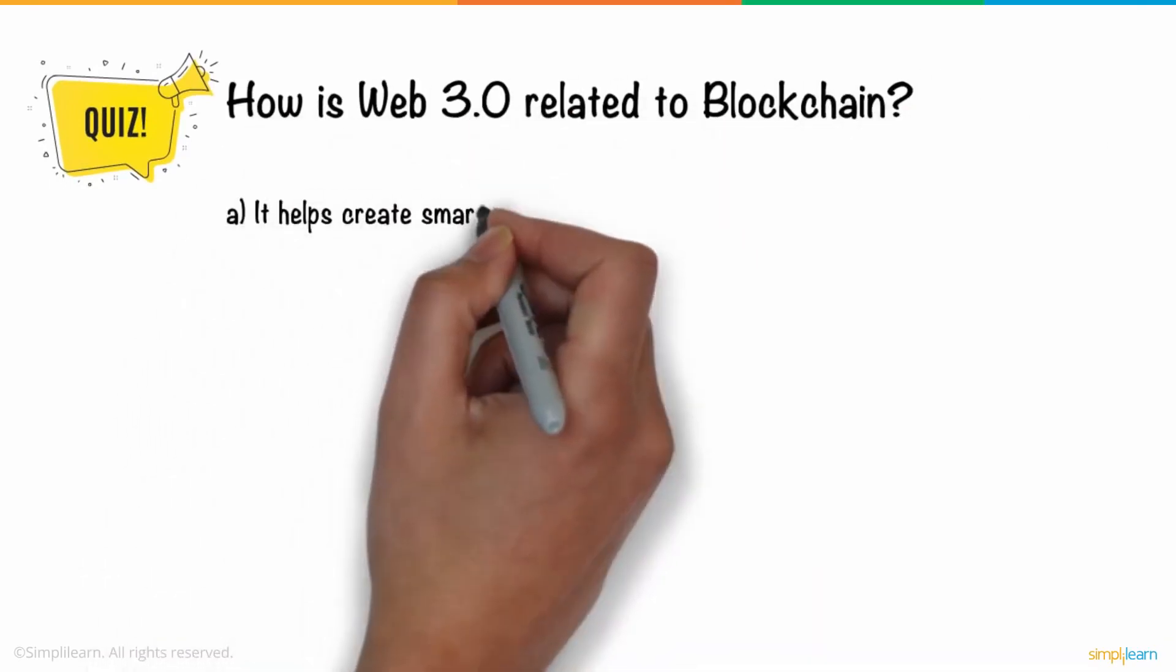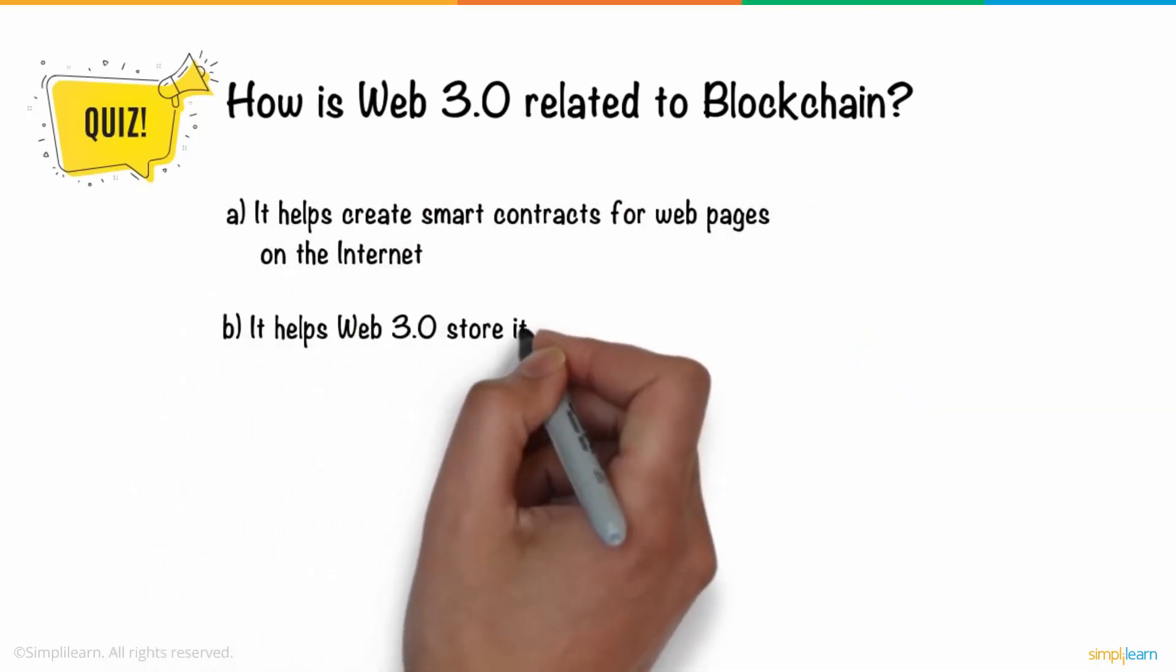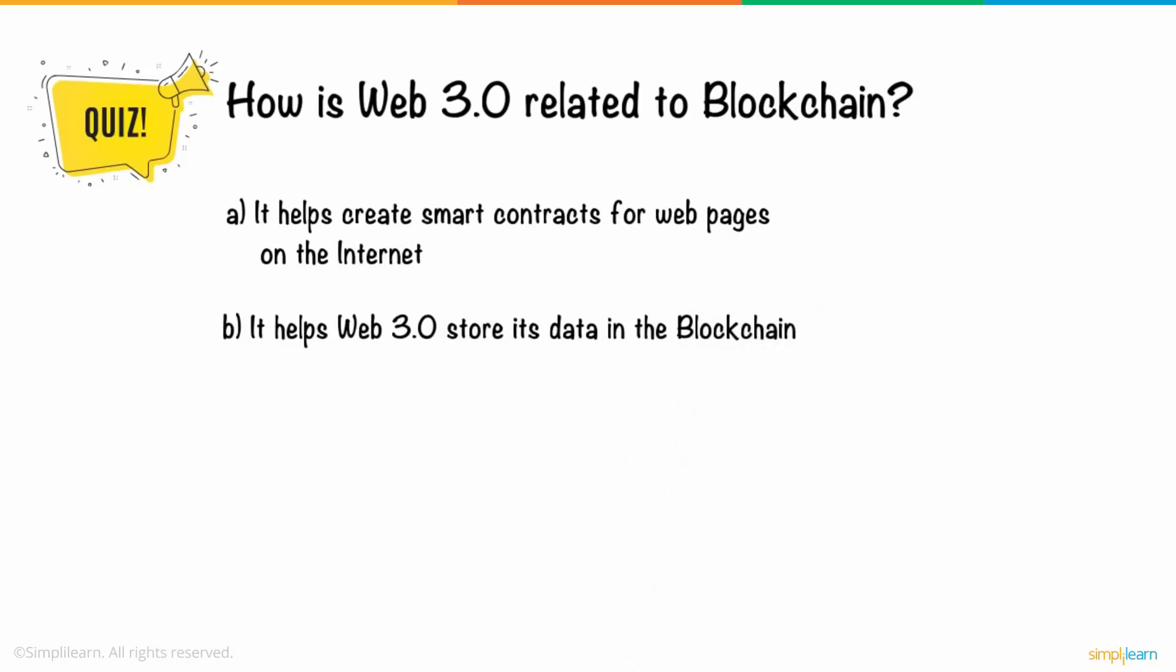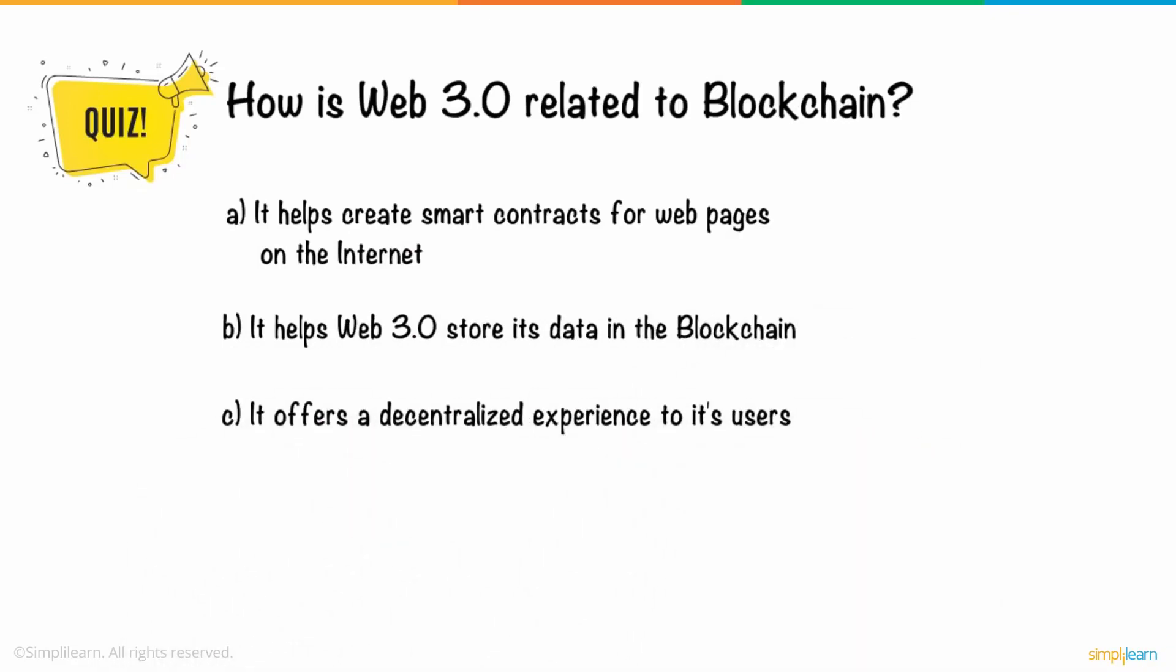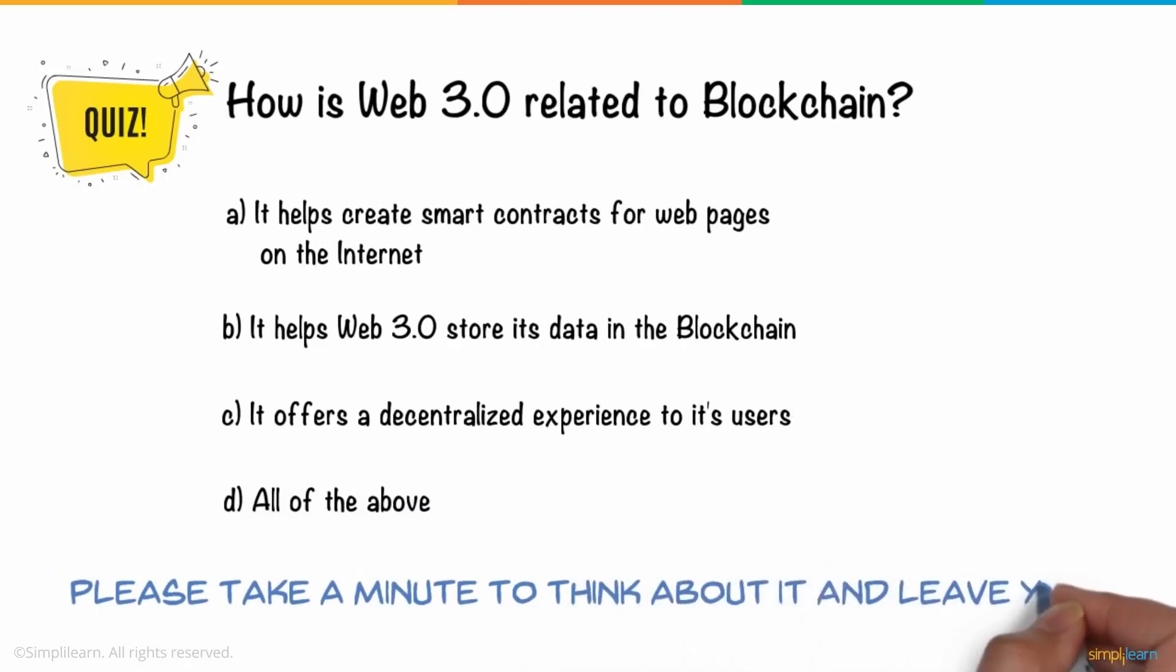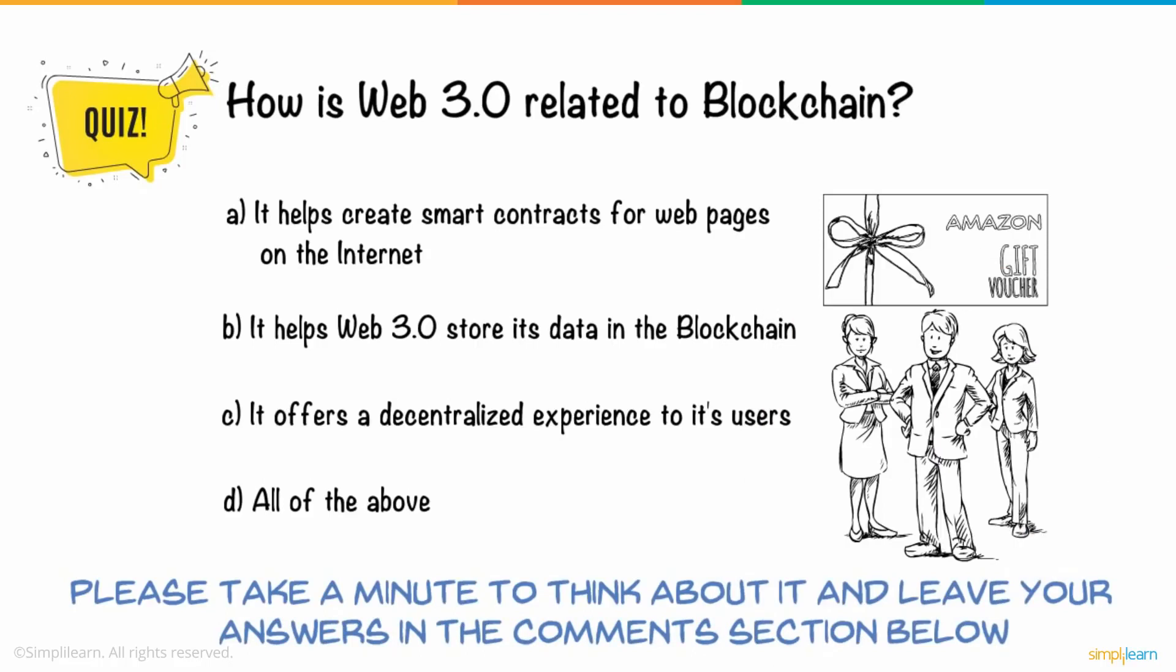A. It helps create smart contracts for webpages on the Internet. B. It helps Web 3.0 storage data in the blockchain. C. It offers a decentralized experience to its users. D. All of the above. Please take a minute to think about it and leave your answers in the comments section below. Three lucky winners will receive Amazon gift vouchers.